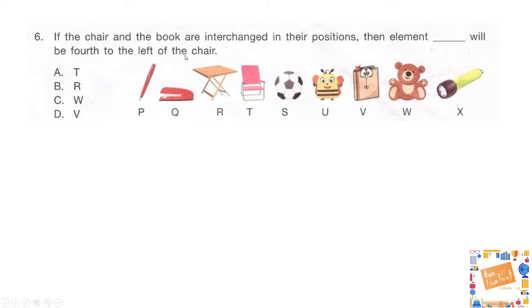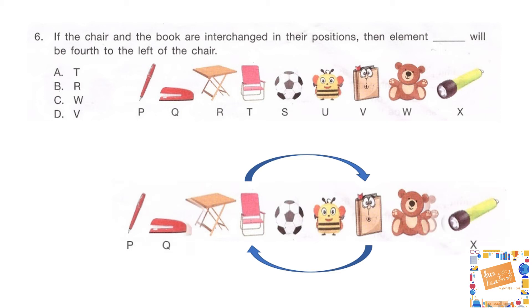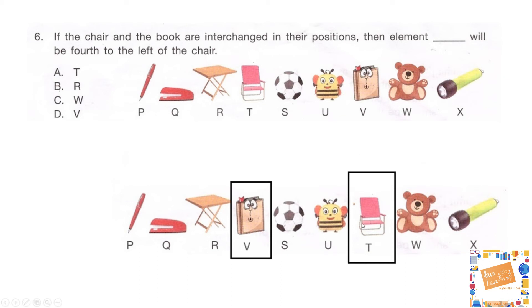The next question: if the chair and the book are interchanged in their positions, which element will be fourth to the left of the chair? The sequence of objects is given, and the options are A — T, B — R, C — W, D — V. After interchanging the positions of book and chair, we get the new sequence. Counting four elements to the left of the chair gives us the fourth element, which is option B — R, the table.